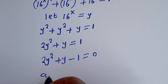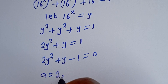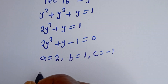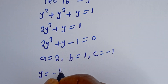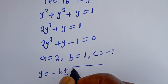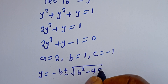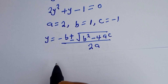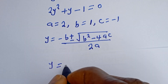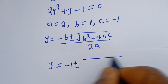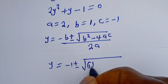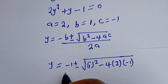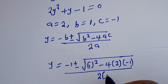In this equation, a is equal to 2, b is equal to 1, and c is equal to minus 1. Our quadratic general formula gives y is equal to minus b plus or minus square root of b squared minus 4ac, all over 2a. Substituting: y equals minus 1 plus or minus square root of 1 squared minus 4 times 2 times minus 1, over 2 times 2.